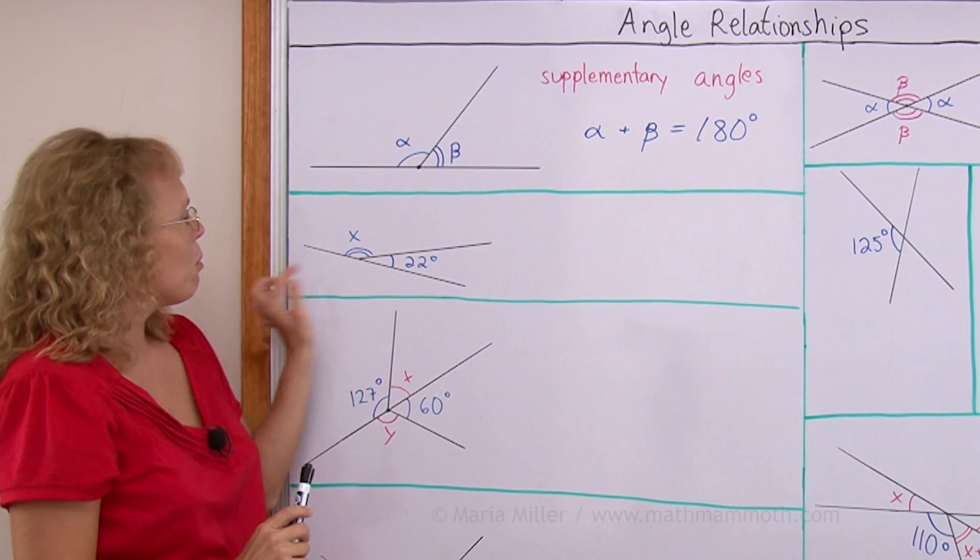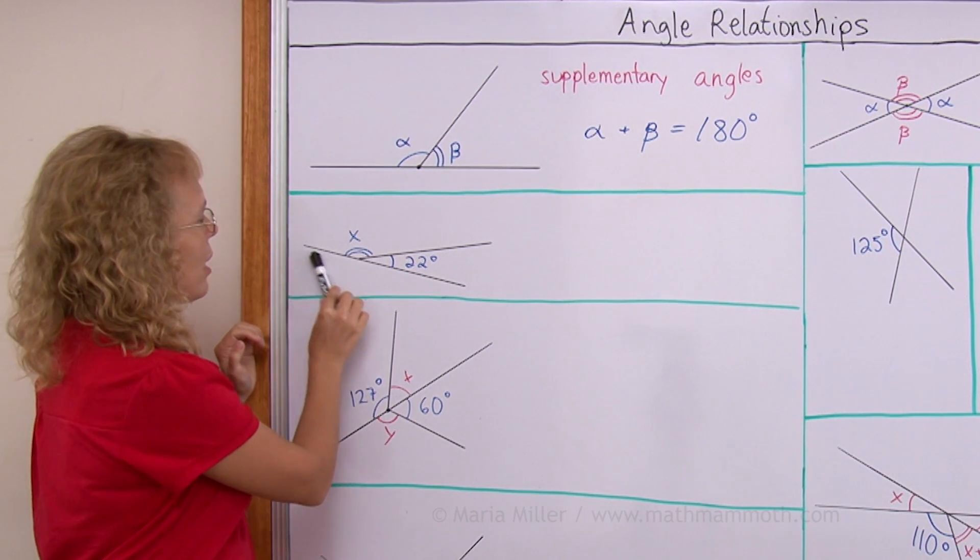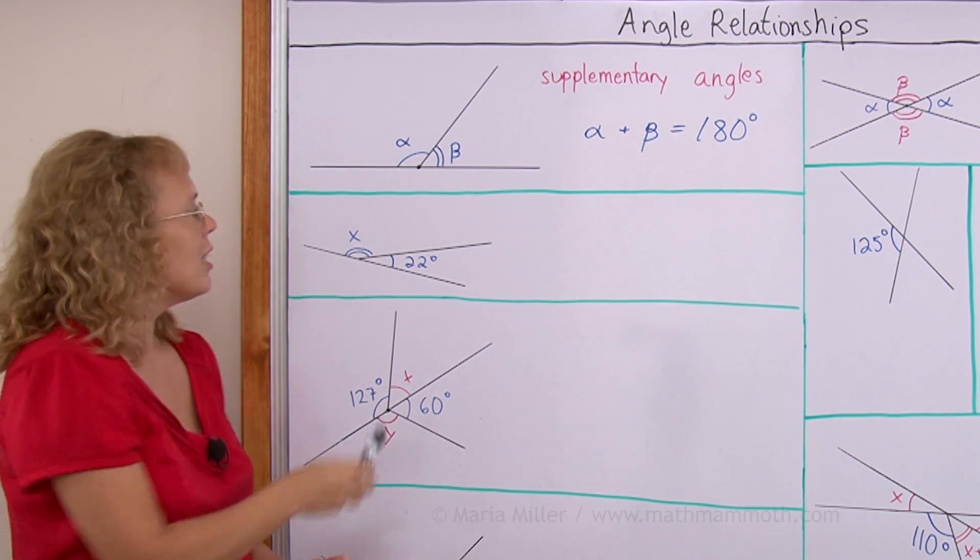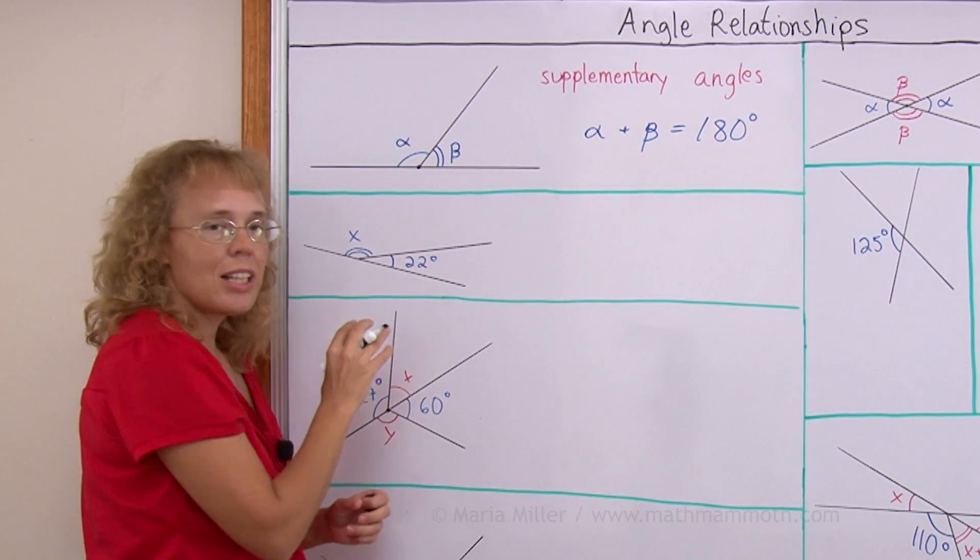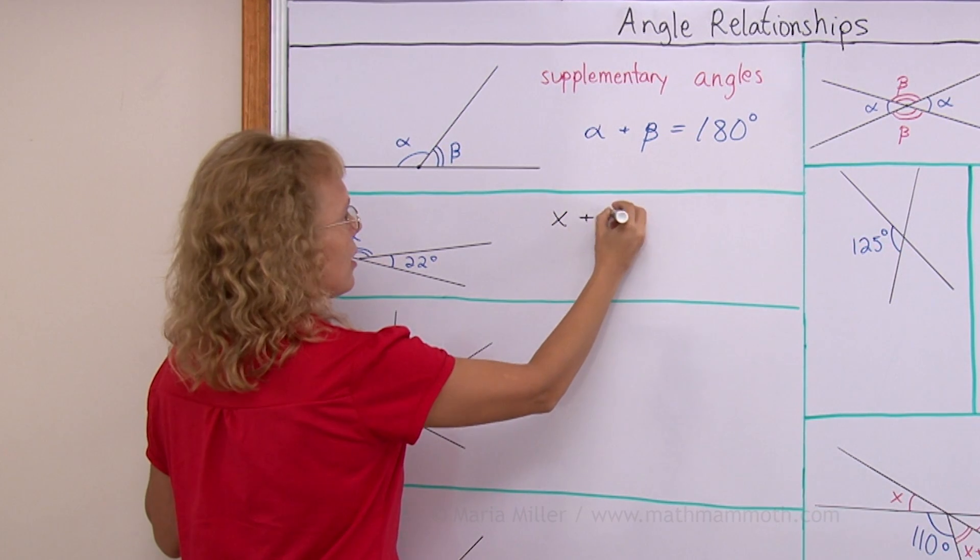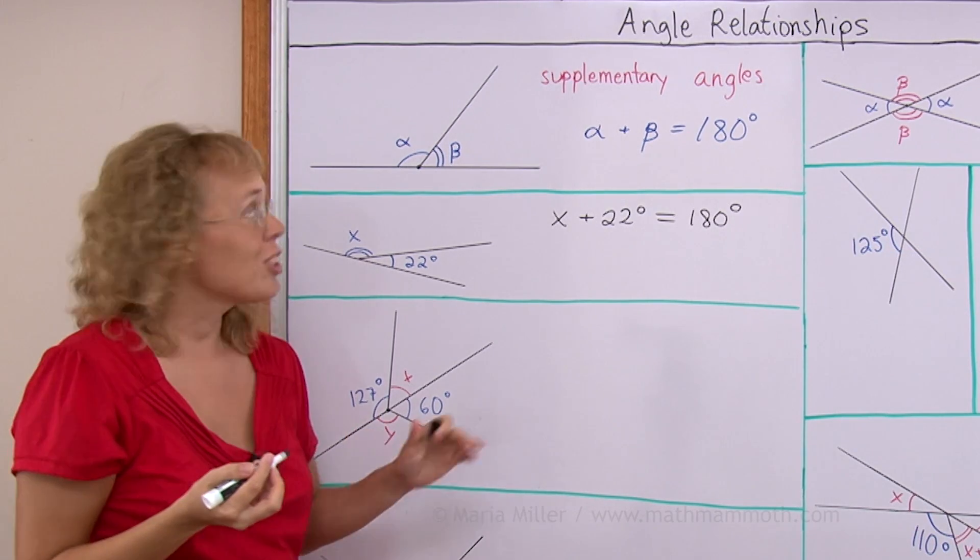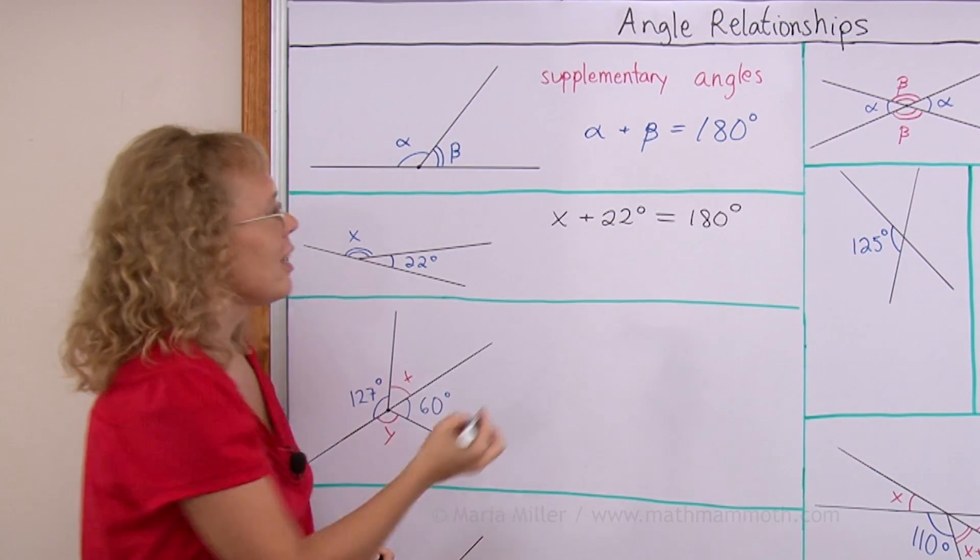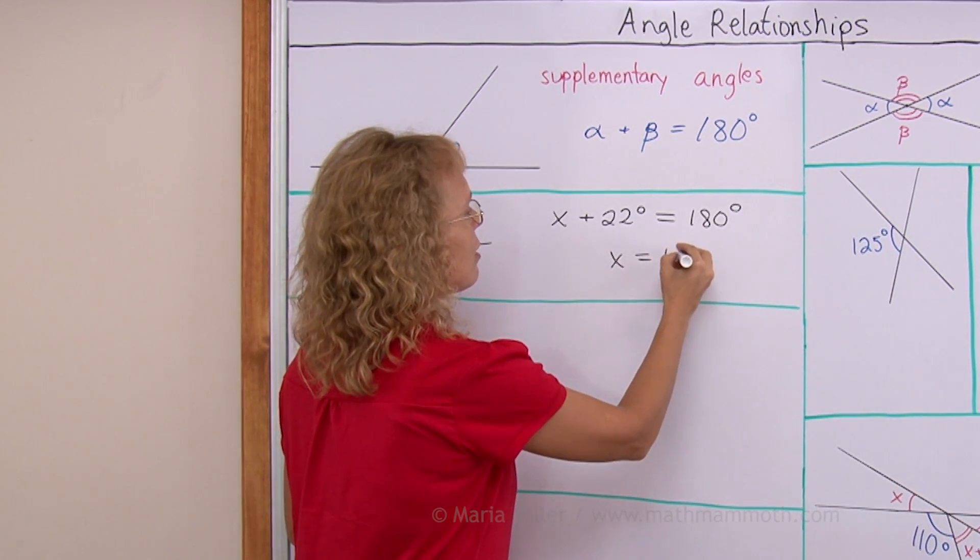For example here, what would be the angle measure of angle X? We have here one line so therefore this total angle must be the straight angle, 180 degrees. So X and 22 add to 180 degrees. We can write an equation. Let's practice that. X plus 22 degrees equals 180 degrees. And now to solve this simple equation you would subtract 22 from both sides and then we get X equals 180 minus 22 which is 158 degrees.